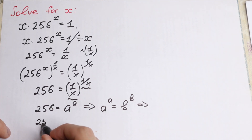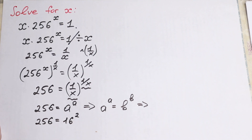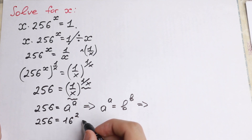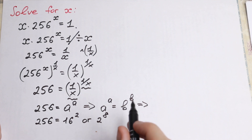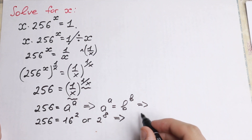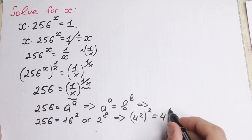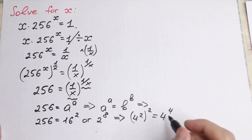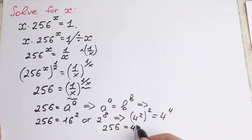Take a look: 256 equals 16 squared, but 16 squared is not ideal for us. Better is 2 to the eighth power. But the best way to express this is 4 squared, all to the second power, which equals 4 to the fourth power. So the best way to express 256 is 4 to the 4th power — same base and same exponent. This is the key expression we need.